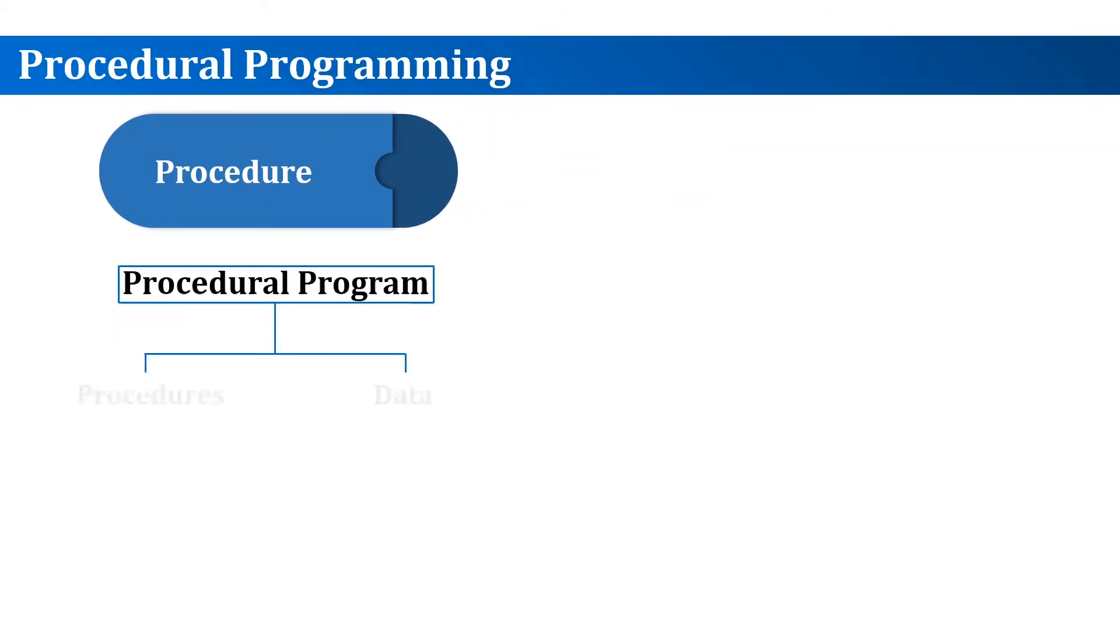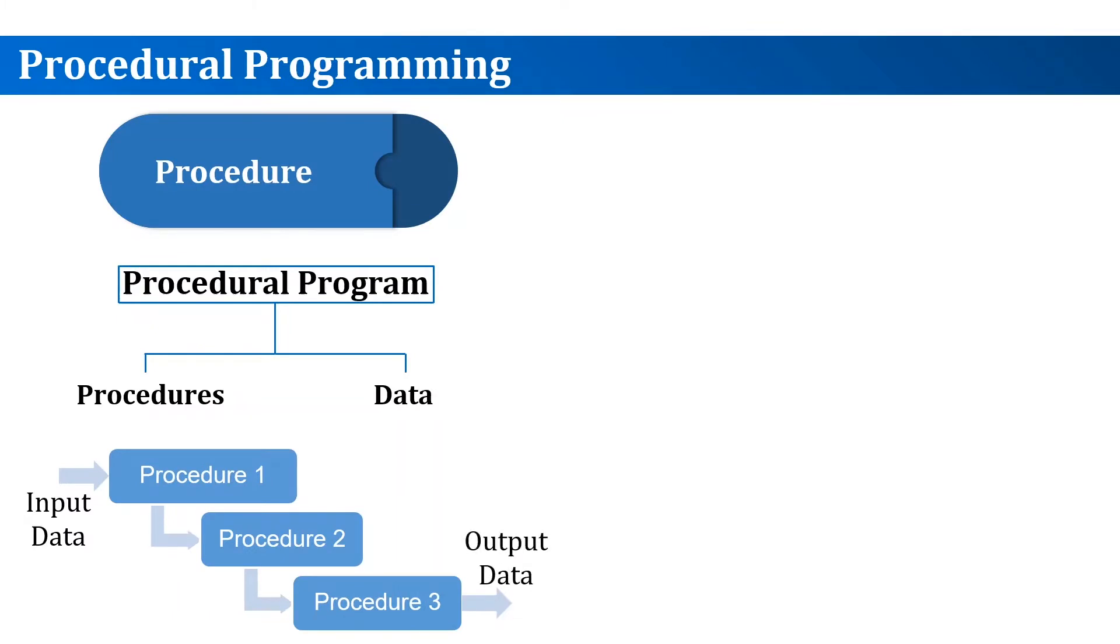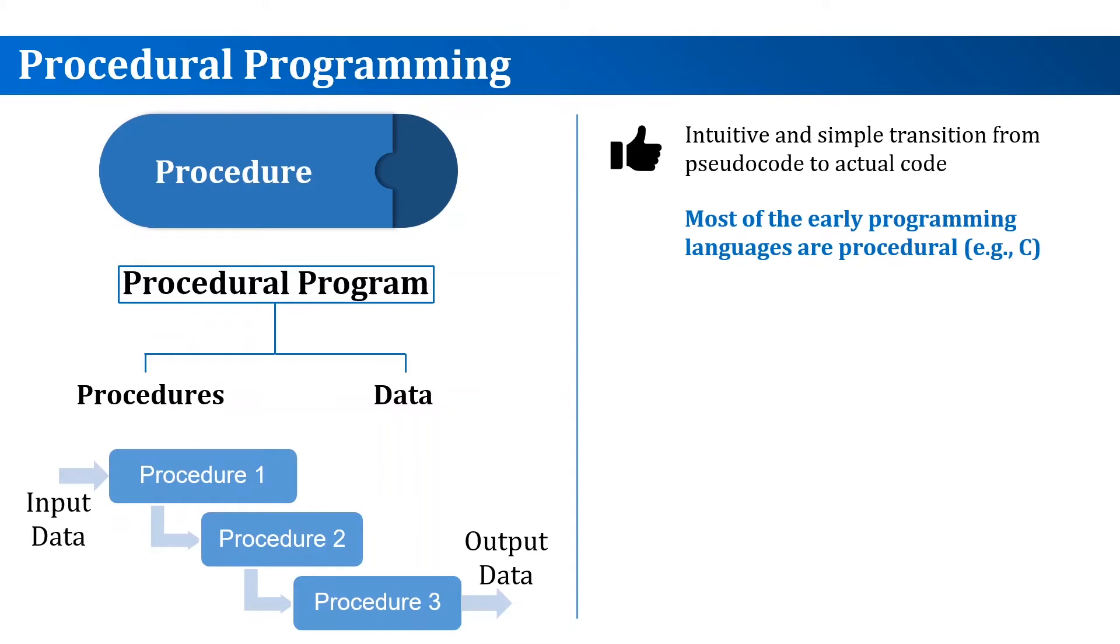An algorithm implemented using procedural programming will have multiple procedures and data being passed between these procedures to be processed. The procedural programming paradigm is straightforward and intuitive. That's why most of the early programming languages such as C and BASIC are procedural languages.